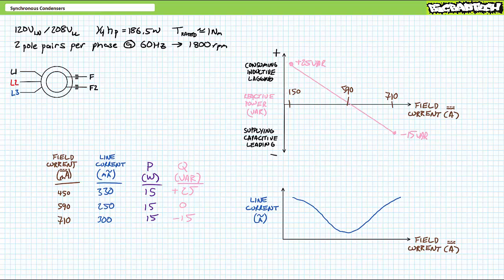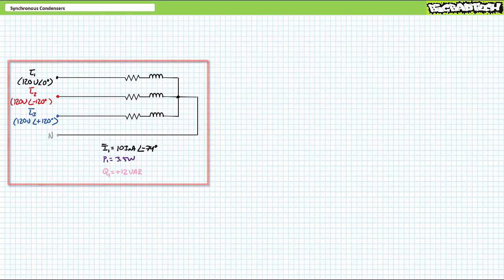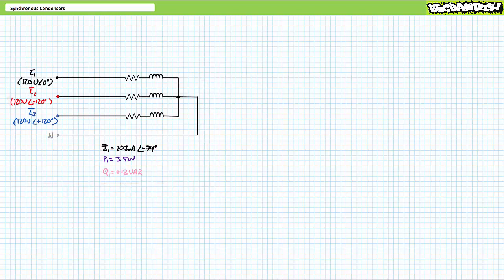Our first load scenario is a balanced Y configuration of a slightly inductive impedance. In the non-power factor corrected scenario, each phase appears to draw 100 mA of current where current lags each phase voltage by a relative 74 degrees. Each load appears to be consuming roughly 3.5 watts of real power and positive 12 VARs of reactive power. This is well inside the correction range of this particular device, and we would expect to slightly over-excite the rotor to supply an equivalent amount of negative reactive power.